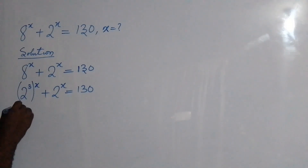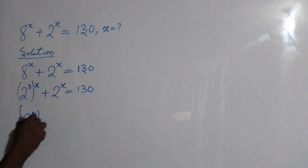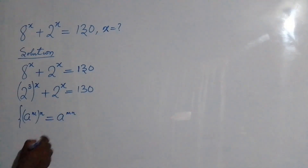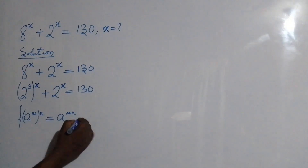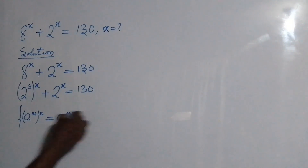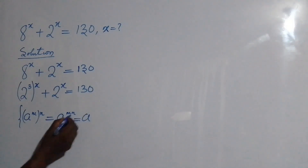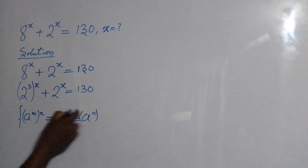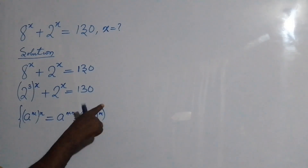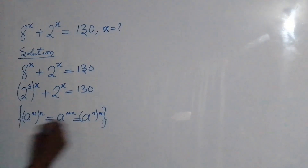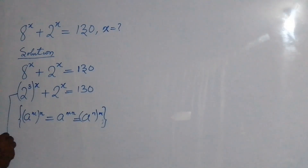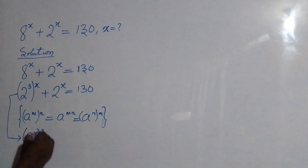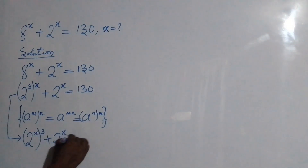Next is to apply this exponent law: a to the power of m, all to the power of n, equals a to the power of mn — where we multiply to get mn. Applying this law, we are going to have 2 to the power of x, all to the power of 3, plus 2 to the power of x equal to 130.